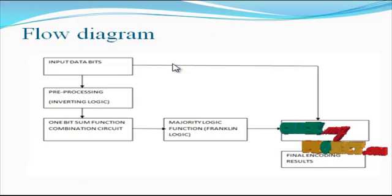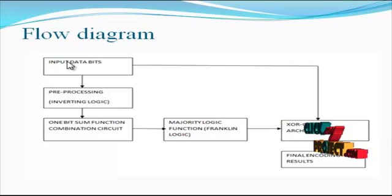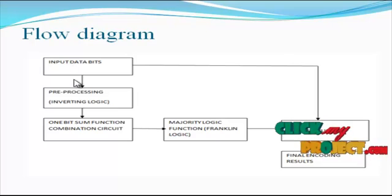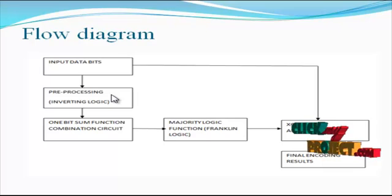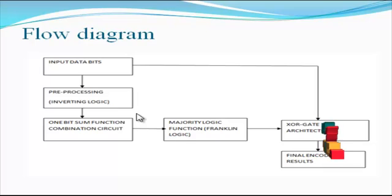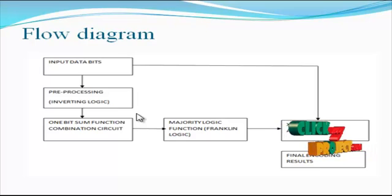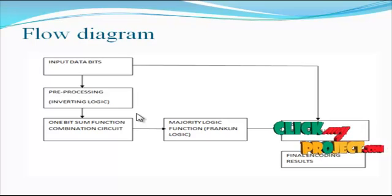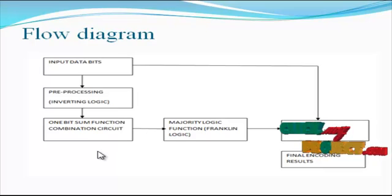Next we see the flow diagram for the project. First, the input data bits are applied to our binary architecture designs. This is the data encoding architecture to apply the binary data bits. This is the pre-processing module for the input data bits. The inverting output results are applied to the 1-bit sum function for the combinational sample architecture. This is the combinational architecture to consider the 1-bit sum function, and the inverting results are applied to the 1-bit sum function to produce combinational results.